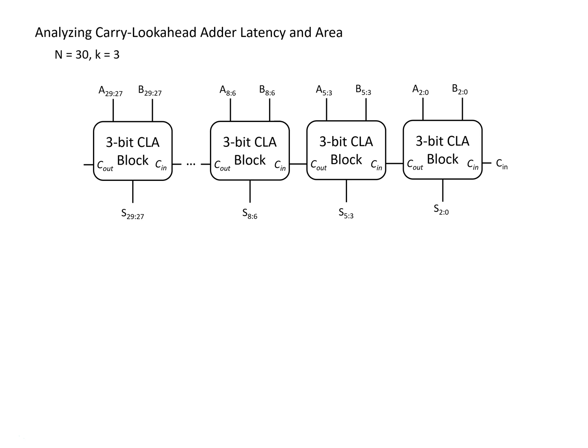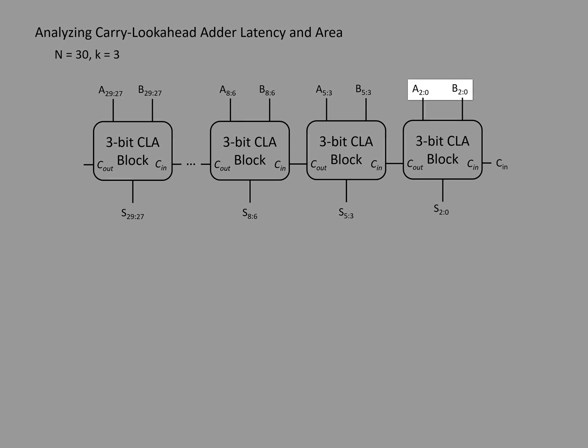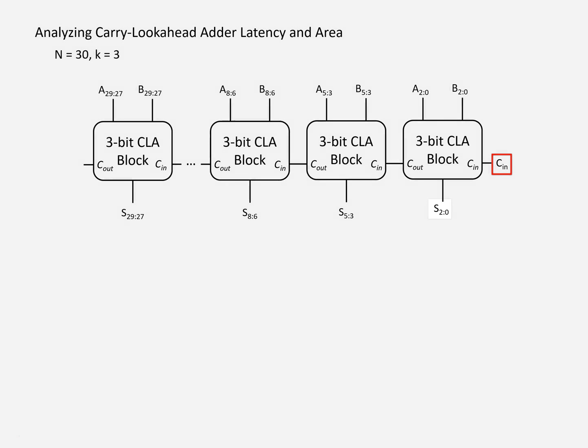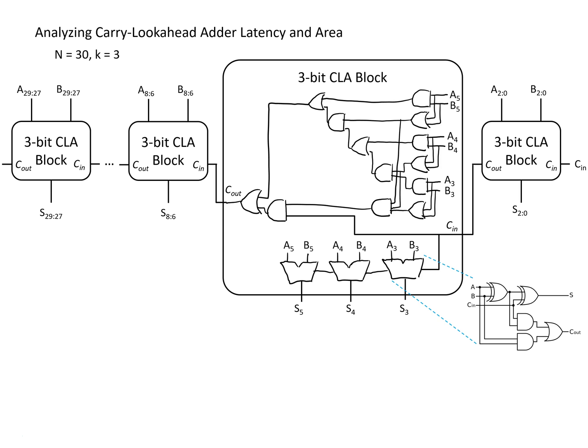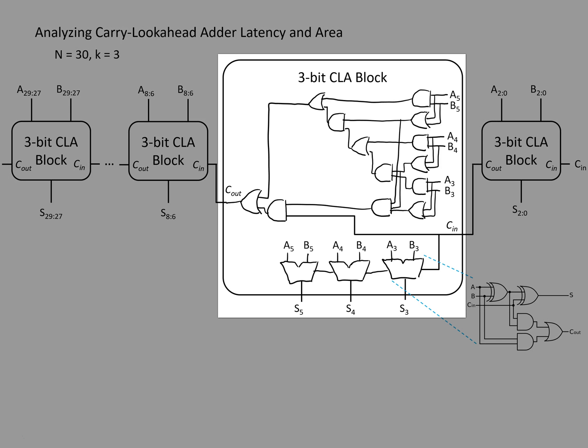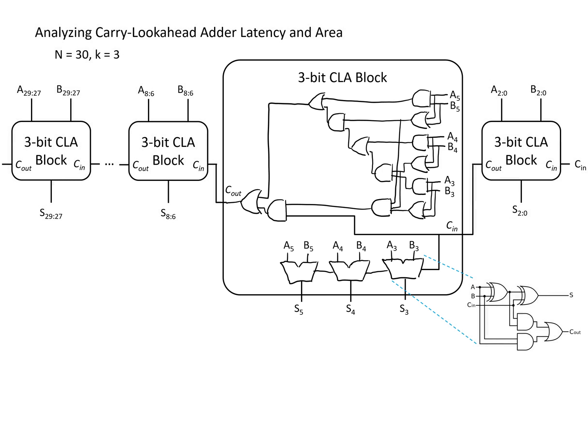We've got a number of three-bit carry lookahead blocks, showing the three bits coming from inputs A and B, the sum bits coming out, as well as the carry in going into the adder as a whole. To analyze both the latency and the area, it will help to see the internals of a single carry lookahead block. After expanding one of those blocks, we can see the internal adders as well as the carry logic. There are basically three things we're going to look at: the critical path or maximum latency, the shortest path which is important when considering hold time, and the area of this block.